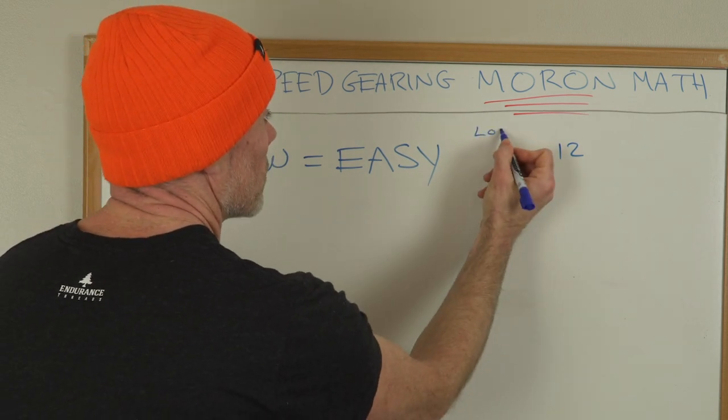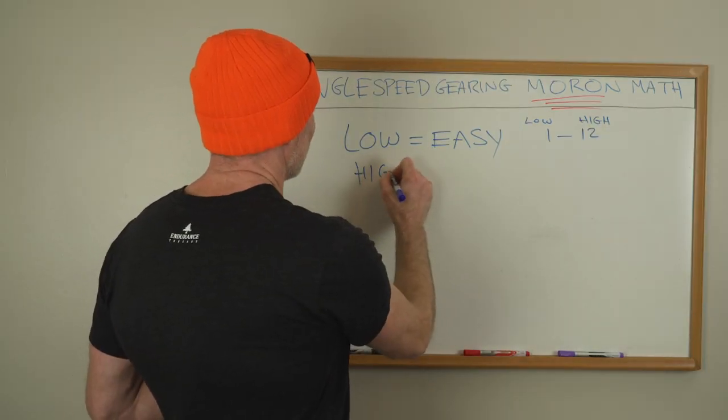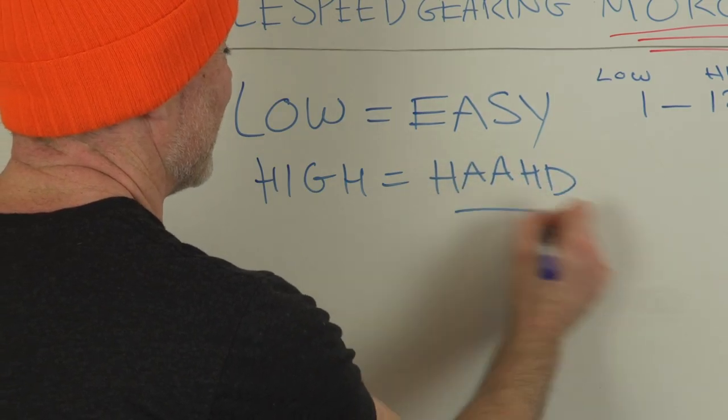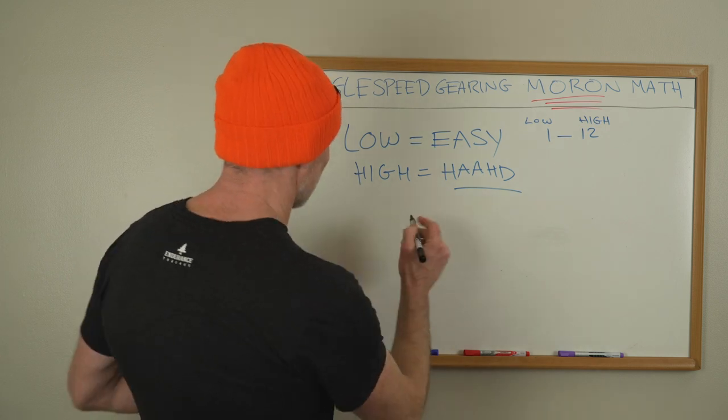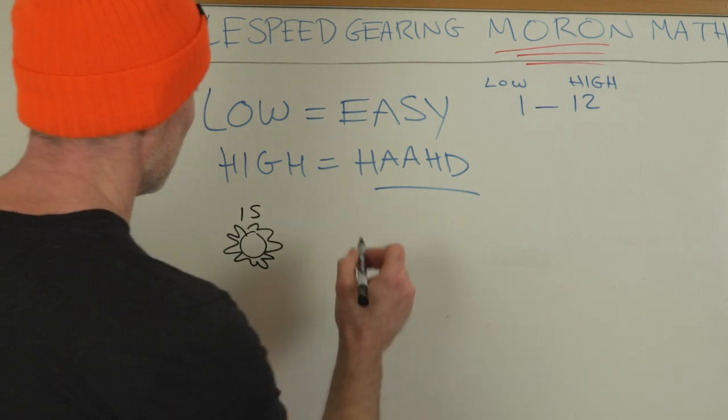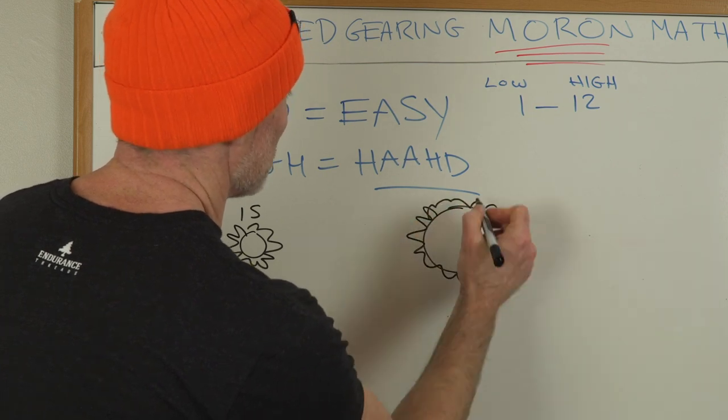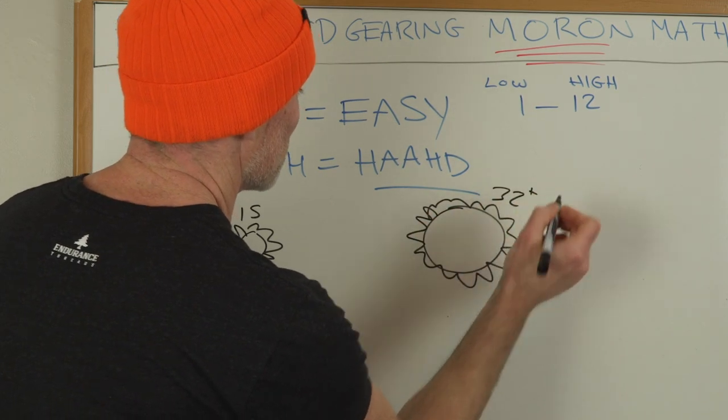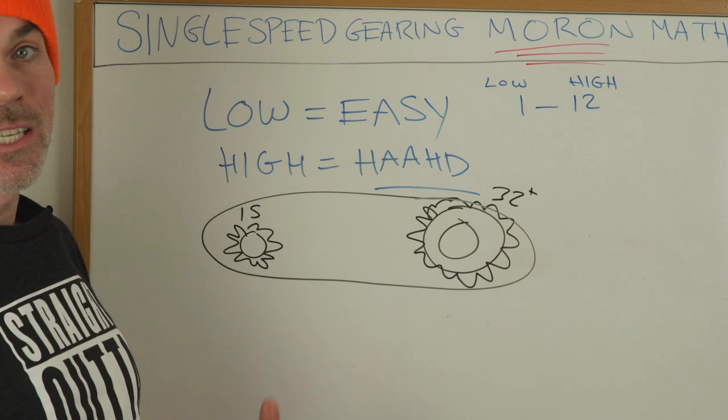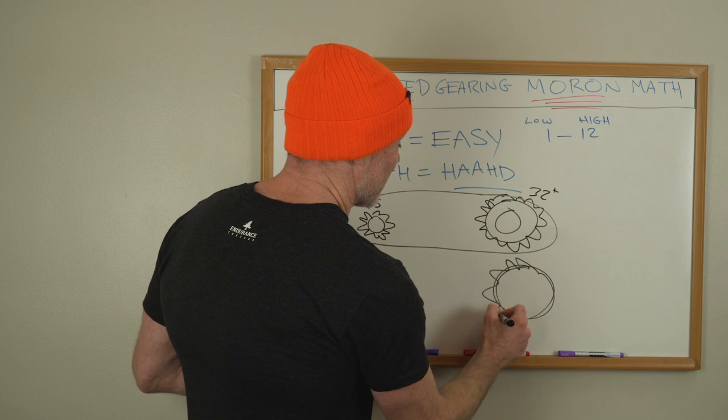This is your low gear, this is your high gear. Low equals easy, high equals hard. For example, if you had a 15 tooth cog and that was coupled with a 32 tooth chain ring, then that would be a pretty high gear, that would be a fast gear because you've got a very small cog, you've got a reasonably large chain ring.